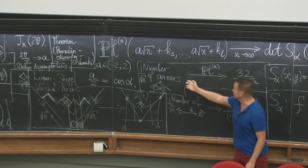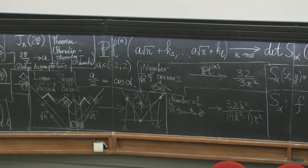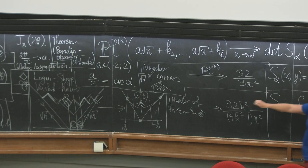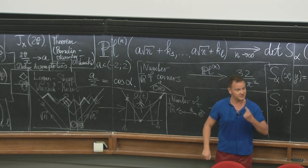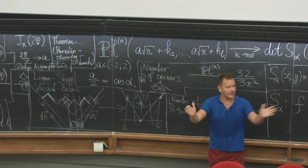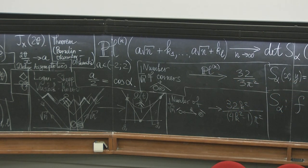Let me conclude with an open problem. The number of corners converges to a constant, but what about the limit theorem for this quantity? This does not fall into the context of the Soshnikov limit theorem because it is not an additive functional — it is a polynomial functional depending on two positions, not one. To the best of my knowledge, such limit theorems in general are not known. Thank you very much.